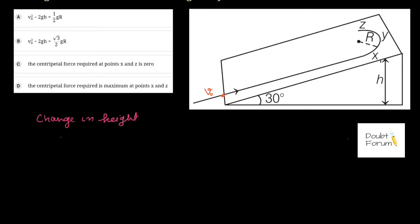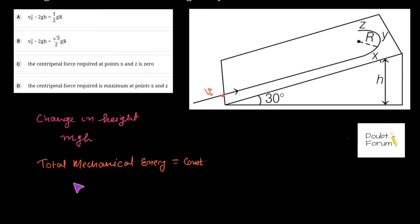The potential energy of an object is a function of its height. Since energy loss is negligible, the total mechanical energy at two different points during the motion would be the same — that is, total mechanical energy is conserved. Mechanical energy is the sum of kinetic energy, given by ½mv², and potential energy, given by mgh. We name the starting point of the ramp as A, and apply conservation of mechanical energy at point A and point Y.